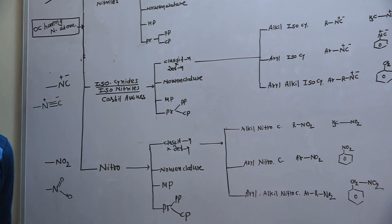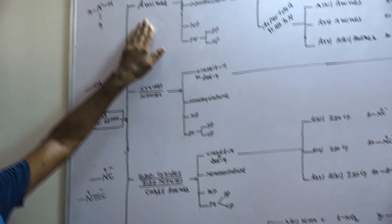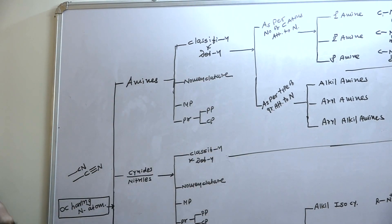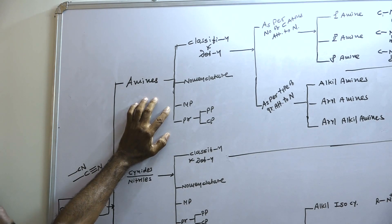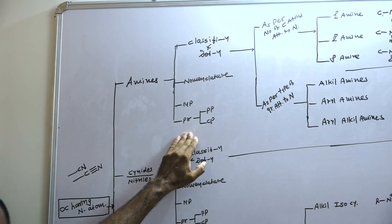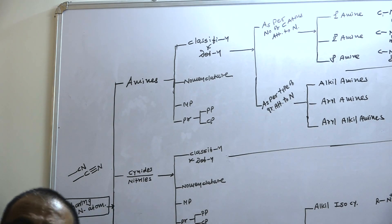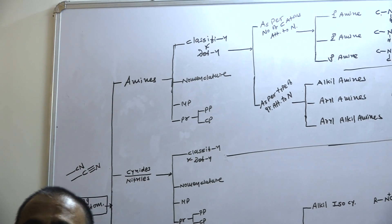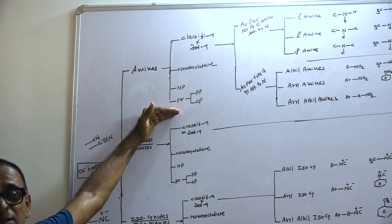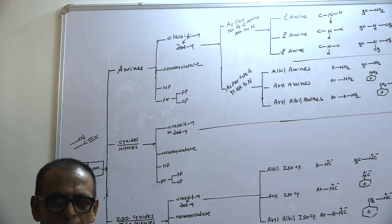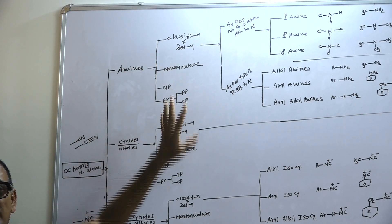Amines are derivatives of ammonia. In amine compounds we should study: classification and definition, nomenclature, methods of preparation, and properties. Properties include physical properties — those which remain constant for a substance — and chemical properties — where a substance gives different products with different reagents. First, we will try to understand the classification of amines.